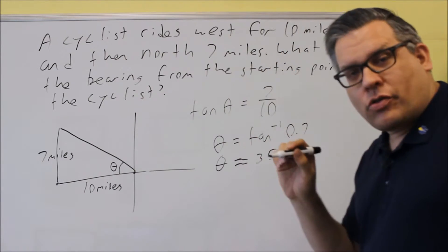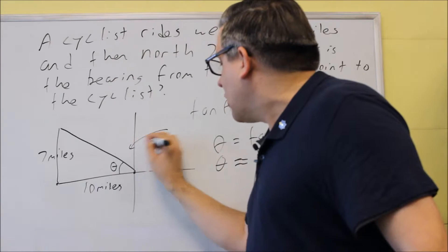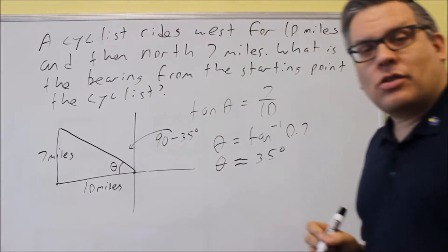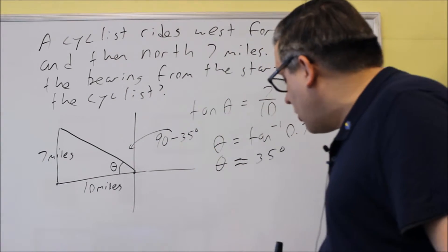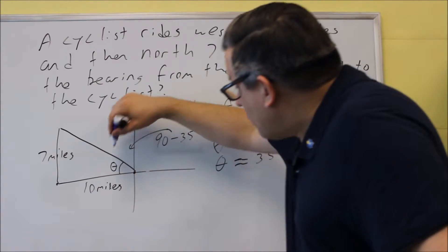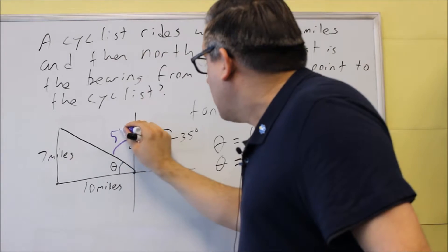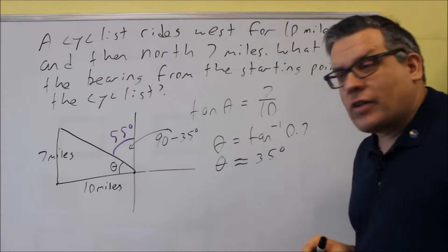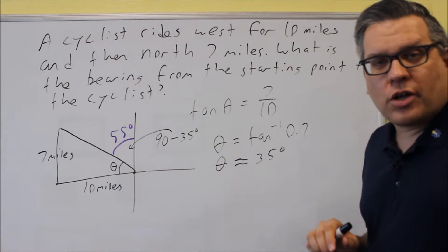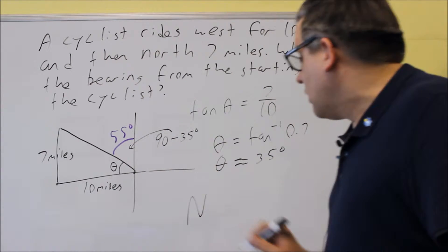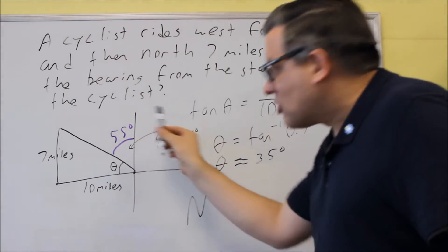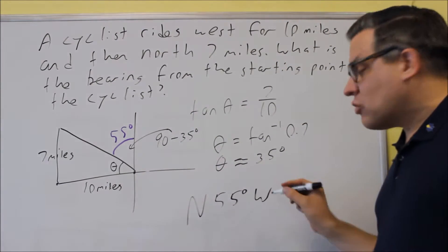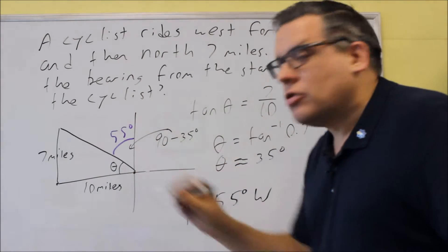But the bearing is measured from north, so I can't use 35 degrees as the bearing angle — it has to be measured from the north. So I'll do 90 minus 35 degrees to get the angle on the outside, and that's the one I'll use for my bearing. That gives 55 degrees. Starting from north and going 55 degrees to the left, that's west. So the bearing is north 55 degrees west.